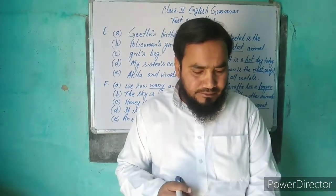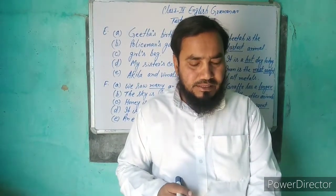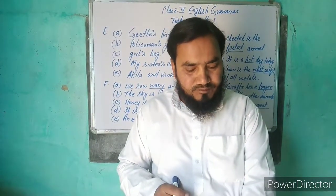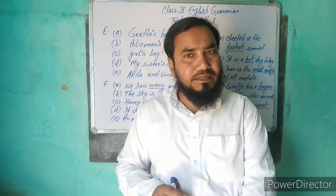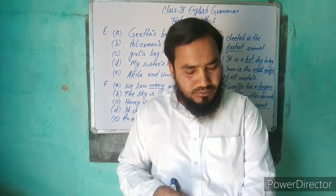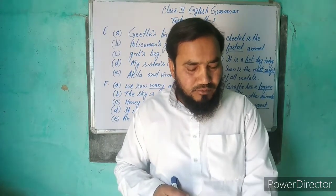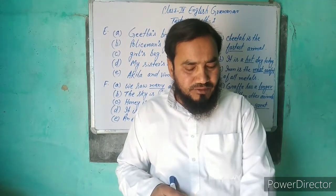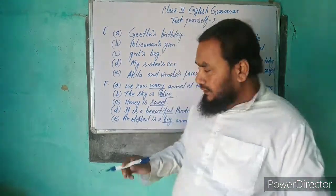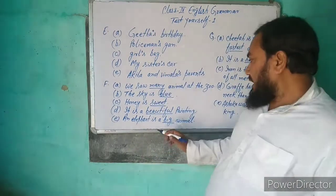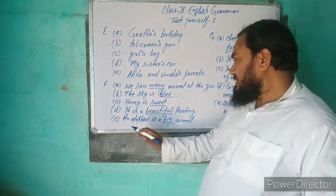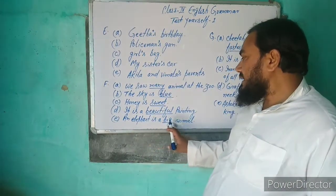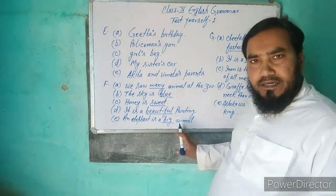E ہے: An elephant is a ___ animal. Options ہیں big, small۔ Elephant بڑا animal ہوتا ہے تو big fill ہوگا۔ An elephant is a big animal۔